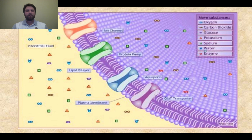So another thing we want to look at is all the different types of substances that can move across the cell membrane. We've got things like oxygen, carbon dioxide, glucose, various different ions like potassium, sodium, of course water, and even some enzymes.